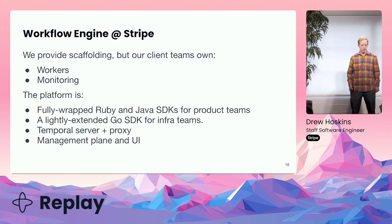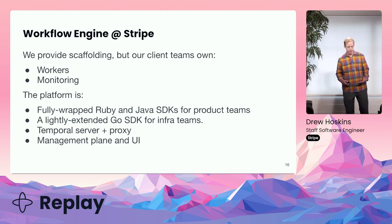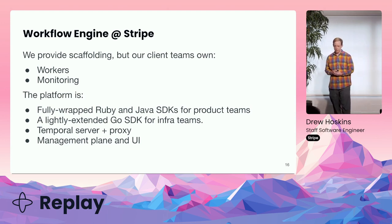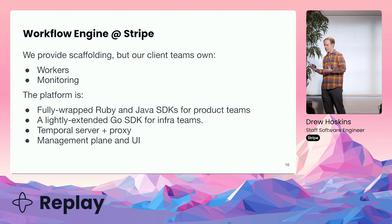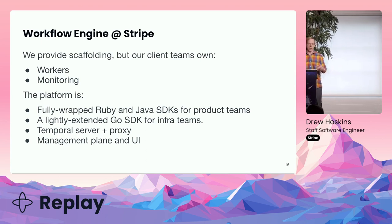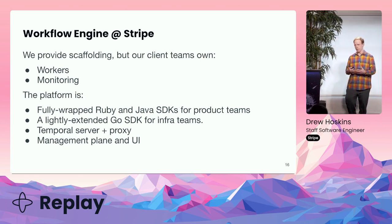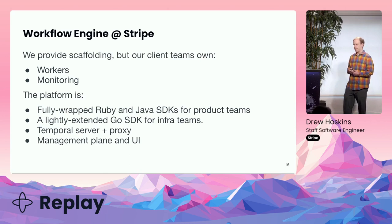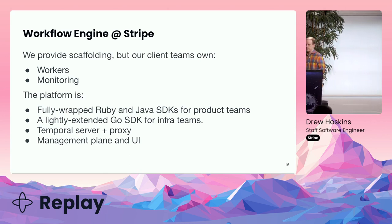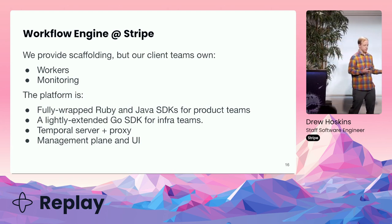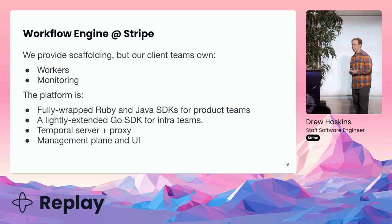The Workflow Engine at Stripe is a pretty large system by this point, and it's getting larger. Stripe has a service-oriented architecture, so our users own their own workers — the things that poll Temporal and do work. We provide a script to set up a new worker and scaffolding for monitoring and alerts. We own Temporal itself, the server, Elastic Surge, and a proxy server. We also fully wrapped the Java and Ruby SDKs in our own abstractions. On the Go side, we have a lot of infra teams using Go, and they're using a lightly extended Go SDK.